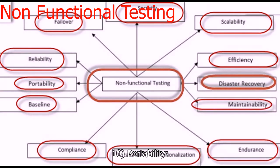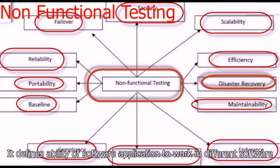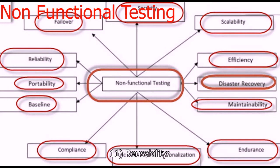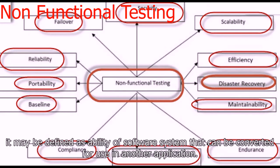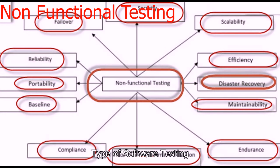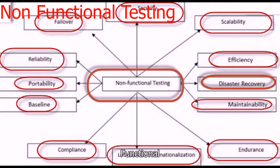Next comes portability, which may be defined as the ability of a software application to work in different software environments. Next comes reusability, which may be defined as the ability of a software system that can be converted for use in another application. In general, there are three types of software testing: functional, non-functional, and maintenance. In this tutorial we are seeing non-functional testing.